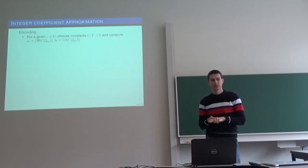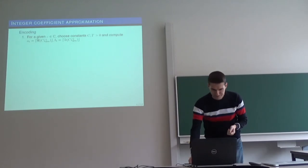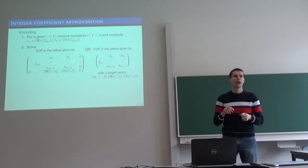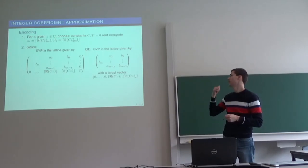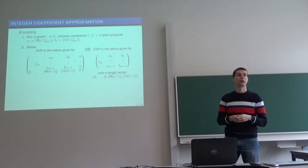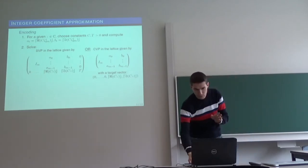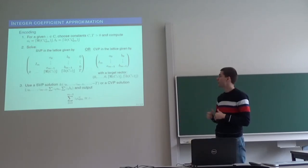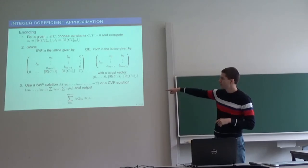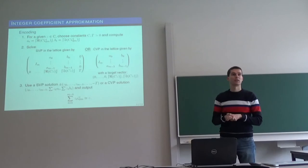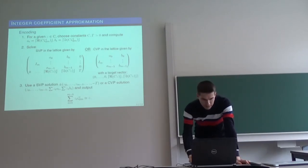Integer coefficient approximation works as follows. So first you need to define two parameters, C and T, which essentially are responsible for the quality of your approximation, for the size of coefficients in your approximation to the complex number, and also how close is your approximation to the given number. So first you compute numbers a_i's and b_i's, and you compose the following lattices. And you solve either a shortest vector problem in the first lattice, or you try to solve a closest vector problem in a given lattice. Then using solutions to one of those problems, you can compose these cyclotomic integers below, which must approximate your given complex number.